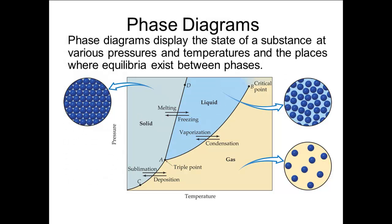If we plot on a single graph the vapor pressure curve for the solid, the vapor pressure curve for the liquid, and the melting point line, we get a figure that is called the phase diagram. This diagram displays the state of the substance under various conditions of temperature and pressure. Along each of the lines is an equilibrium between two states of the substance.